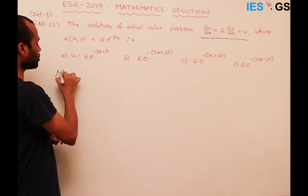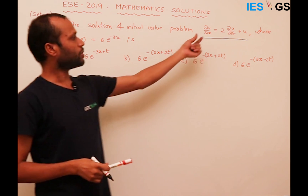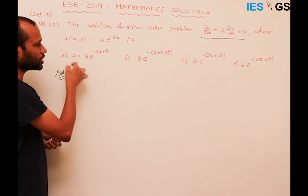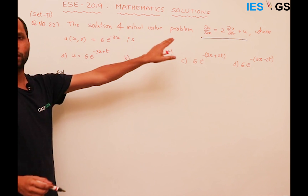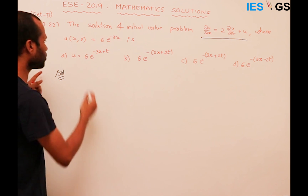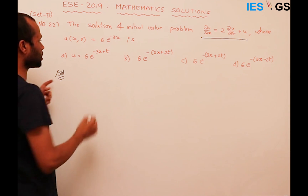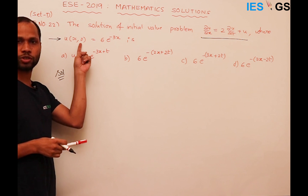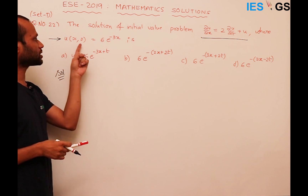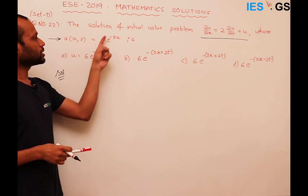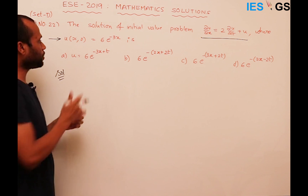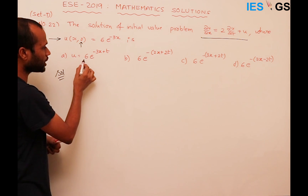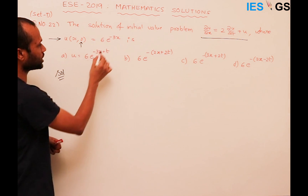Options were given. The best way to solve questions of this type is to substitute the options and check whether they satisfy the given conditions. The first condition to check is the initial value: u(x, 0) = 6e^(−3x). Keeping t = 0, you should get this value. Substituting gives 6e^(−3x), so this option satisfies the condition.